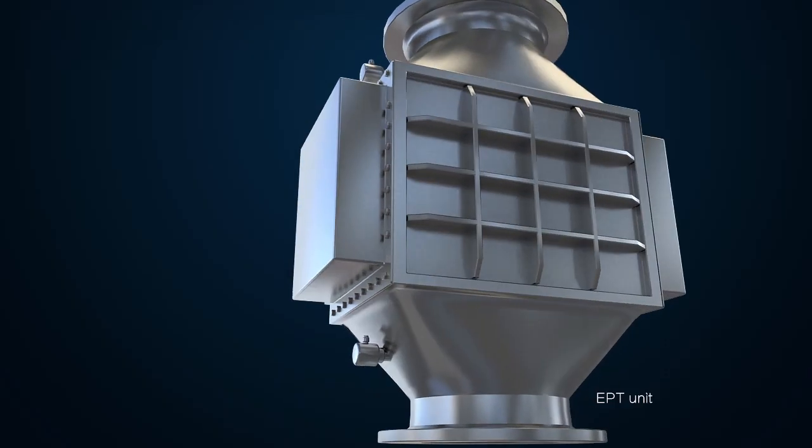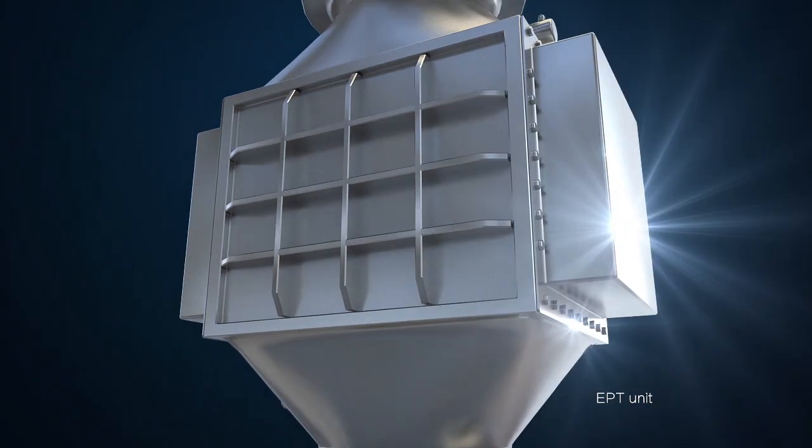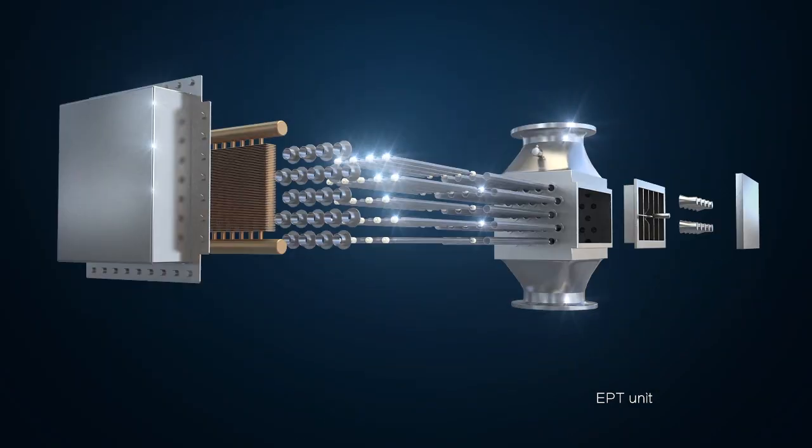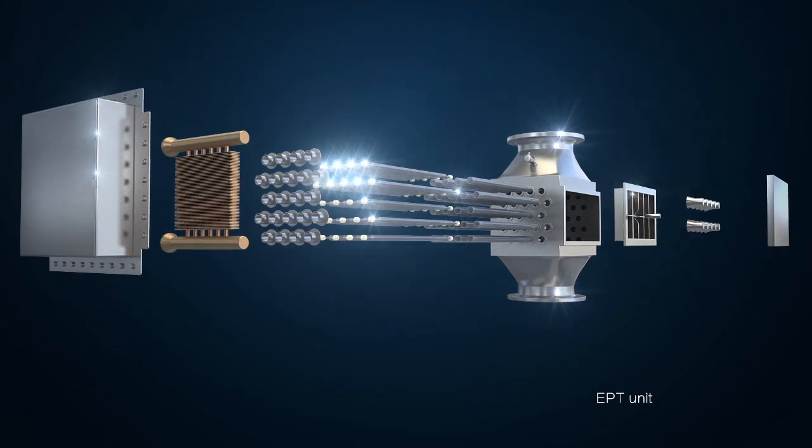The EPT unit is mainly composed of ultraviolet lamps, quartz tube, ultrasonic vibrator, sensors and cooler.